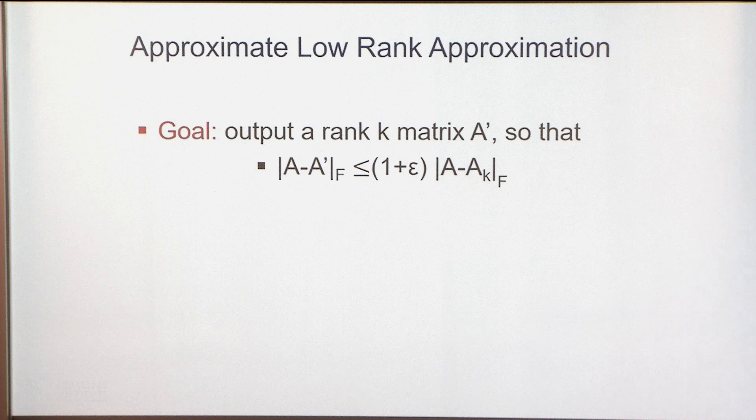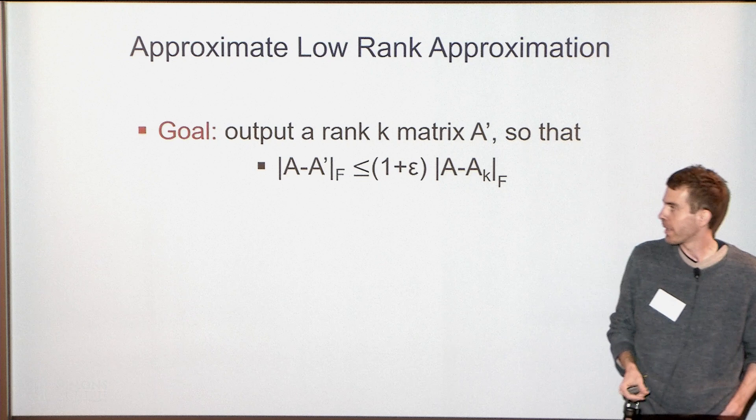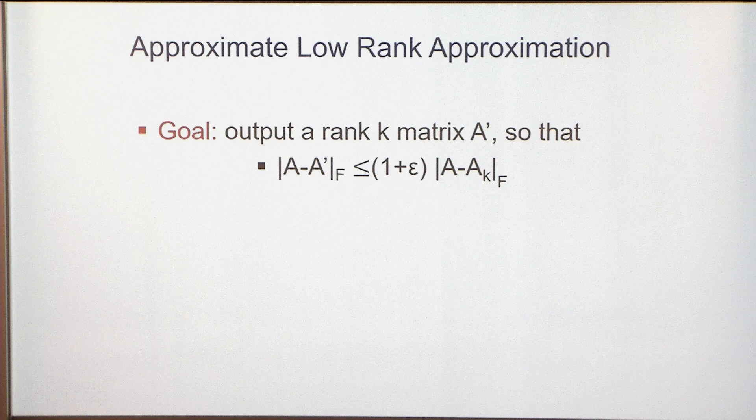People have been looking at a relative error notion for low-rank approximation. The goal is to output a rank-K matrix A' such that the Frobenius norm of A minus A' is at most (1+ε) times the best possible low-rank approximation cost given by the SVD, allowing some probability of failure. With this relaxation, you can get significantly faster algorithms.